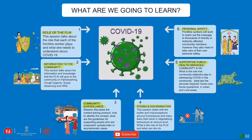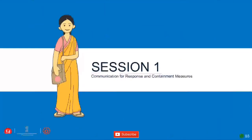This video has mainly six sessions, each with its own importance: the role of the frontline worker, information to the community, community surveillance including contact tracing, maintaining why we shouldn't have stigma and discrimination, supportive public health services, and personal safety of frontline workers.